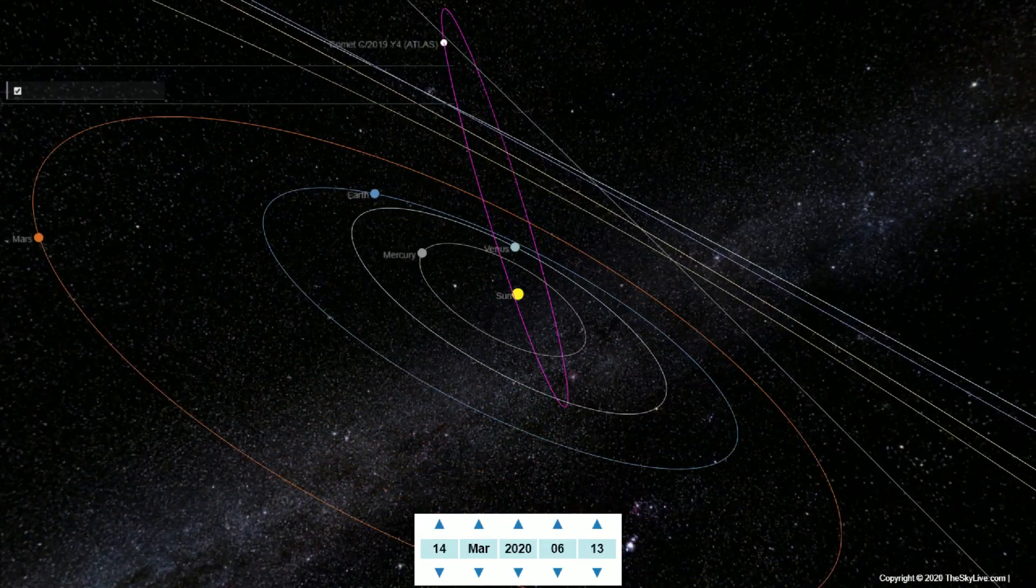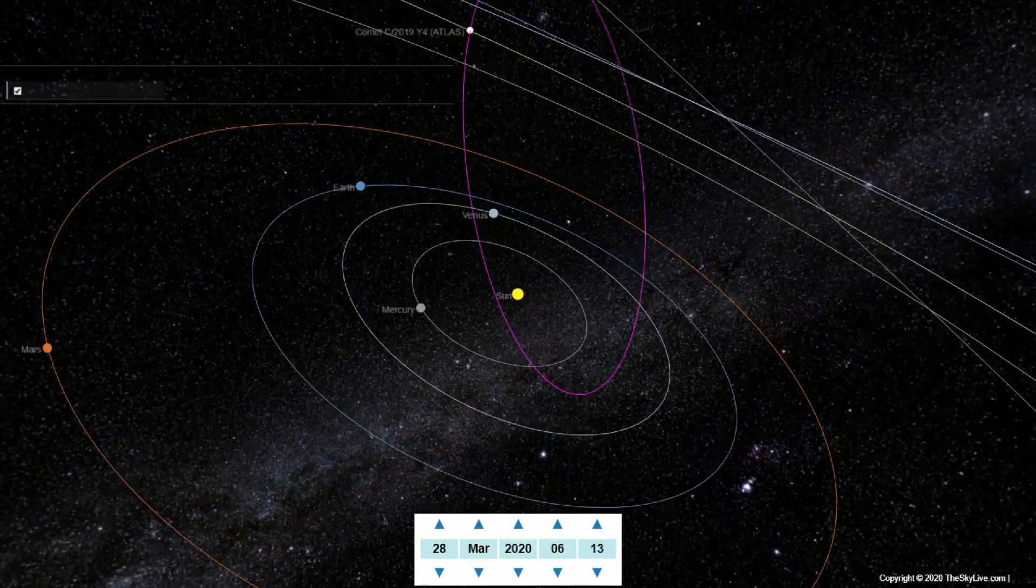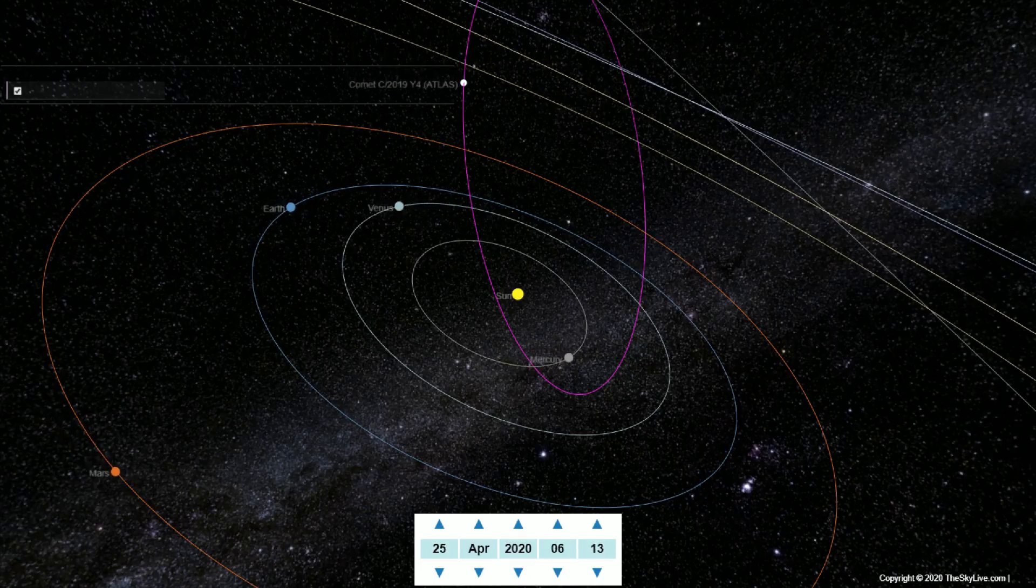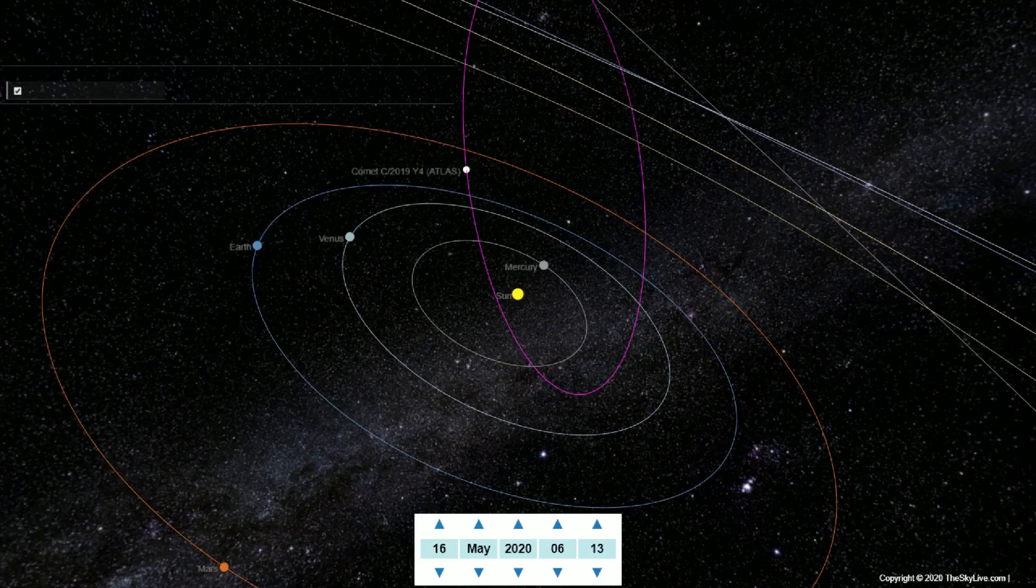C-2019 Y-4 was discovered on CCD images taken on December 28, 2019, with a 0.5 meter reflecting telescope atop Mauna Loa in Hawaii.